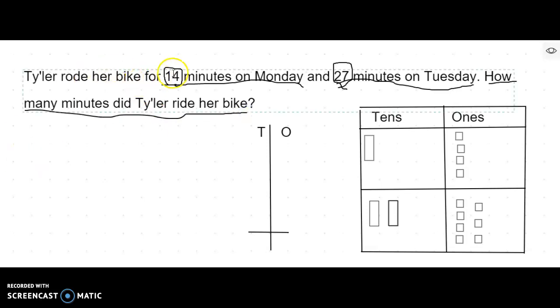So I know Tyler rode her bike for 14 minutes on Monday and 27 minutes on Tuesday. And I just want to know how many minutes she rode her bike. So I just want to know how many minutes total I'm adding. And the two numbers I have are 14 and 27. So I'm going to do 14 plus 27.